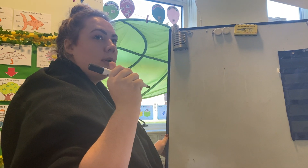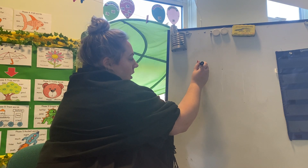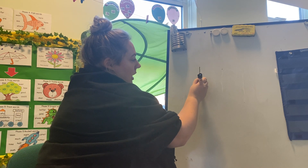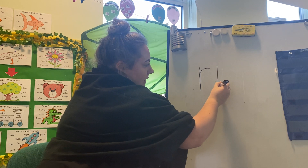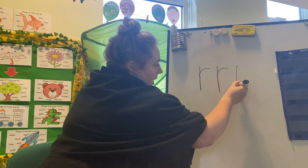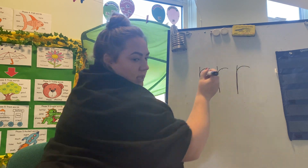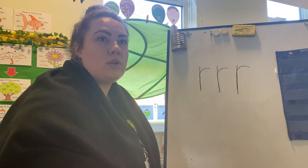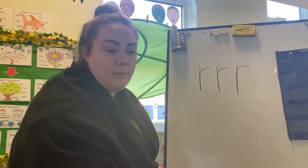Good job. Now we're going to practise writing it on the board. Down his back and curl over his arm. Down his back and curl over his arm. Down his back and curl over his arm. Well done. Can I see lots of your 'r's on your paper, please?